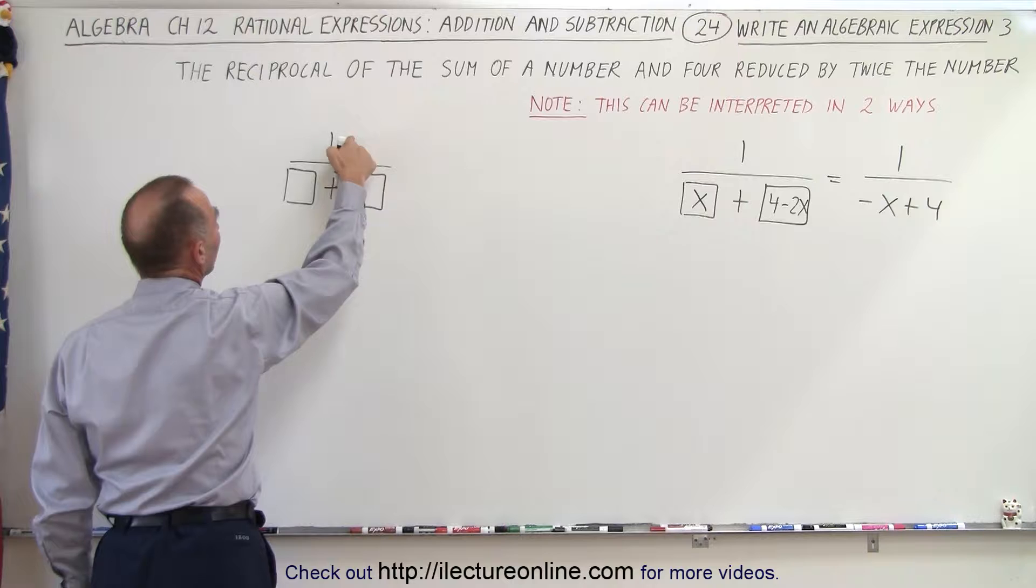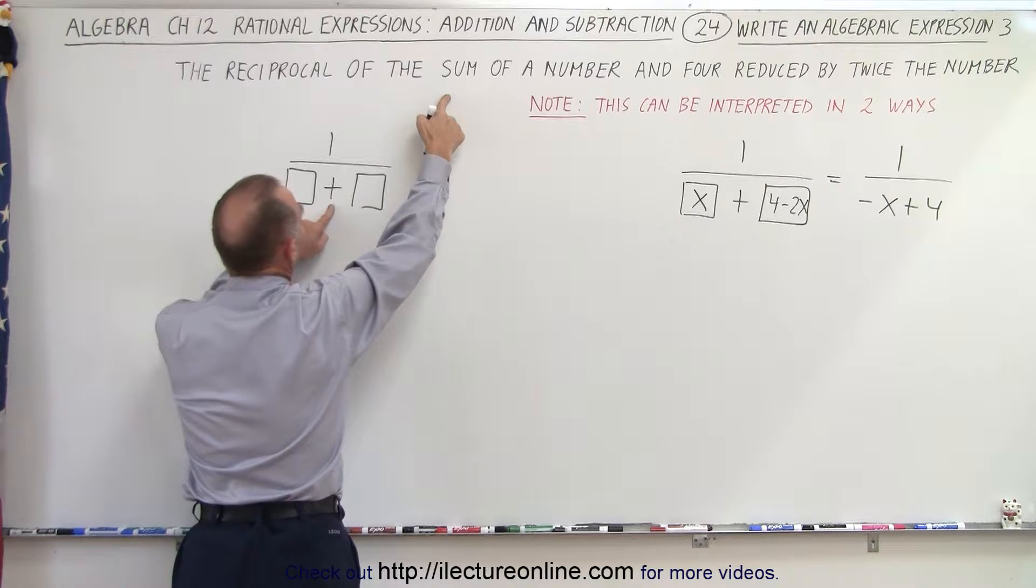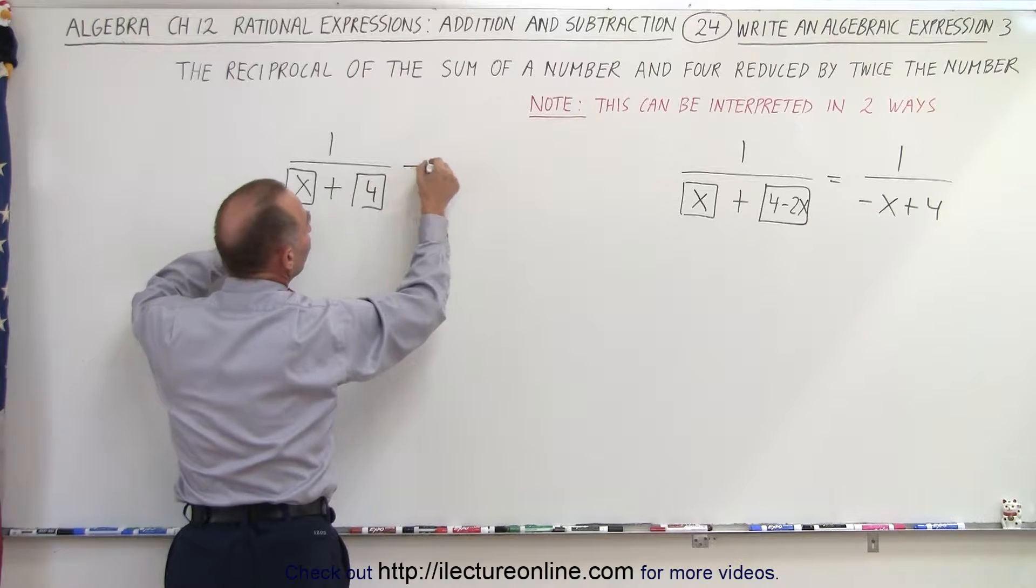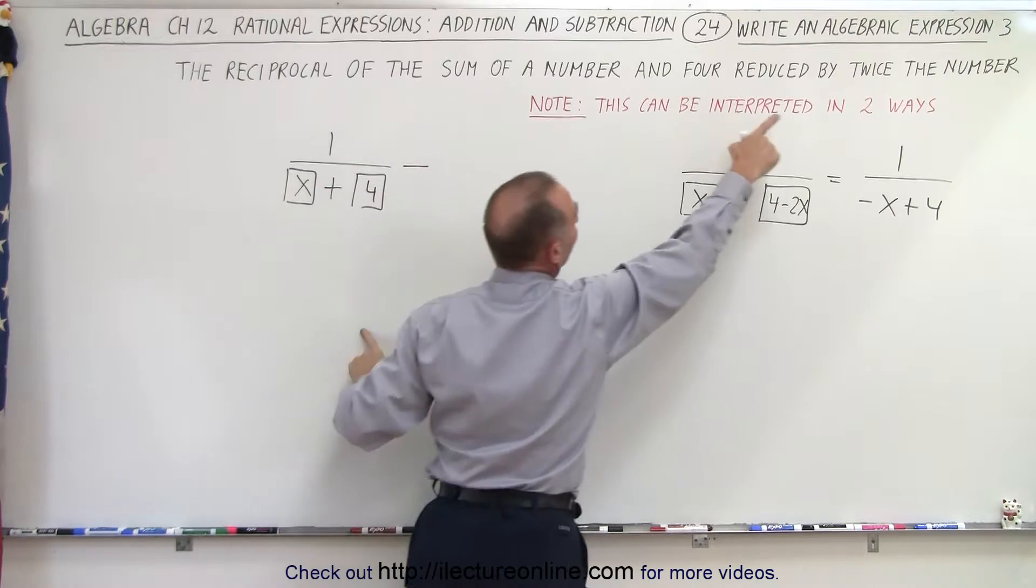So here this is the reciprocal of the sum of two things, which is a number and 4, reduced by twice the number.